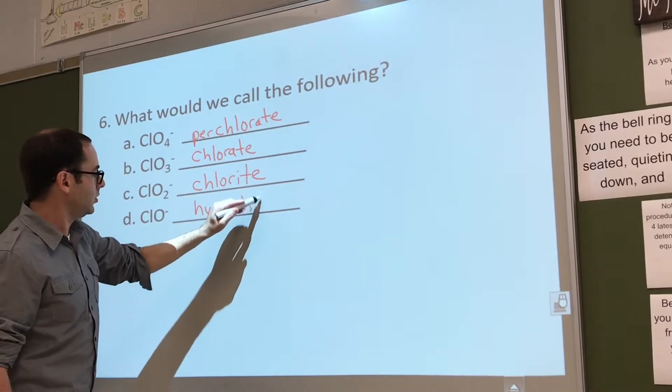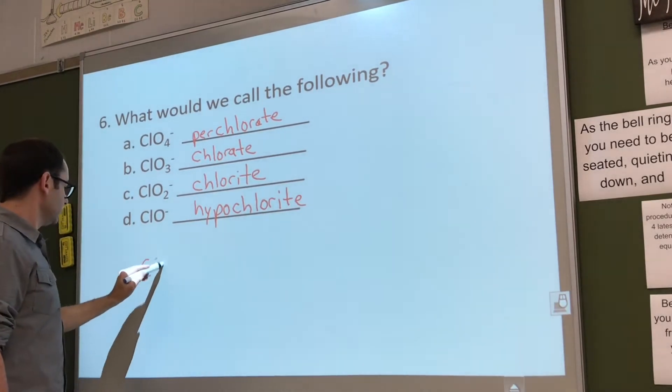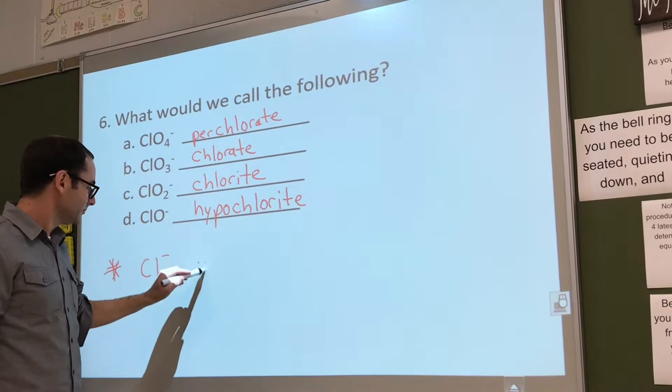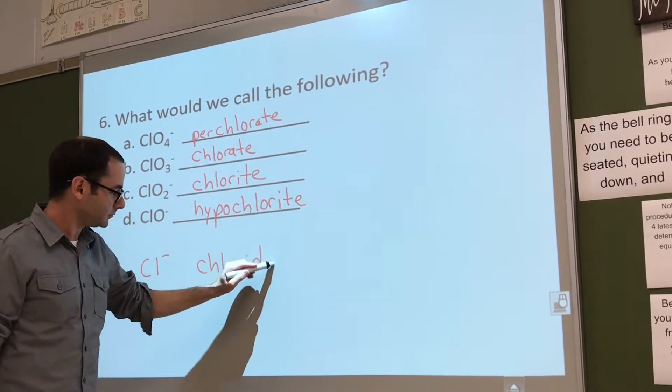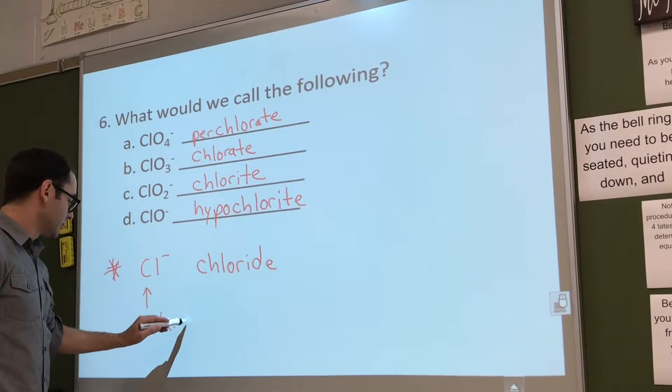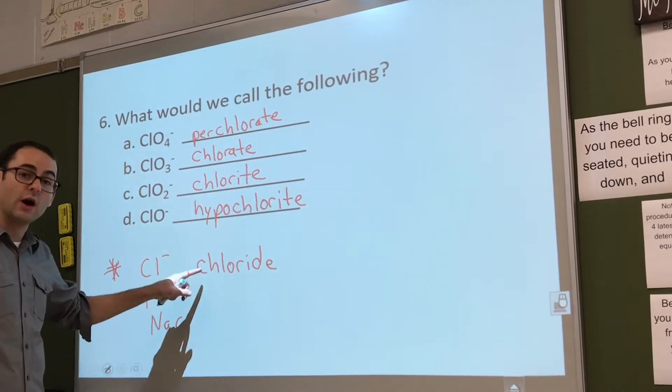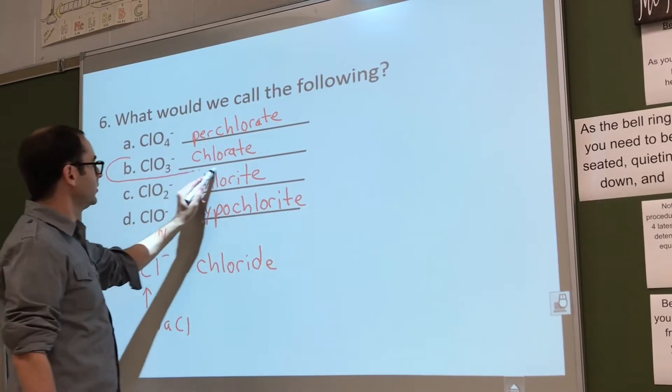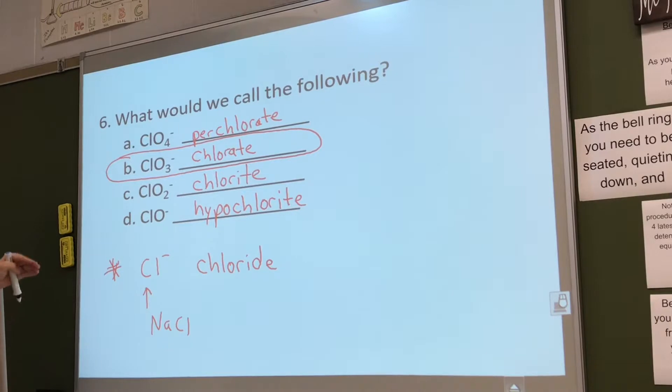And one less oxygen than that is hypochlorite. What if it didn't have any oxygens? Chloride. That's the first thing we learned, right? Anything you take off the periodic table, if you change the ending, it's -ide, like sodium chloride. This isn't a polyatomic ion, this is just a regular ion. That's what makes this tricky. If it's a polyatomic ion, you have to remember the one you memorized, then you start changing or adding prefixes and suffixes and all that stuff.